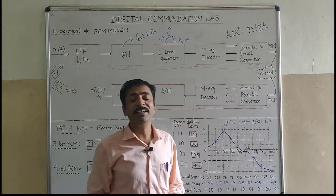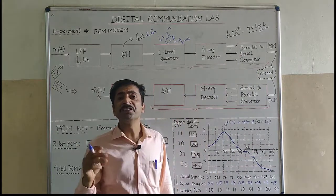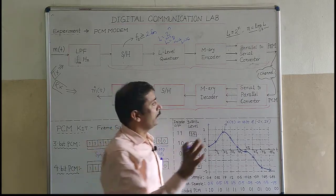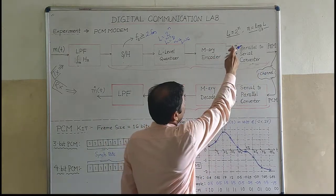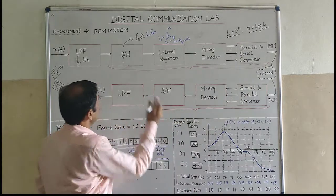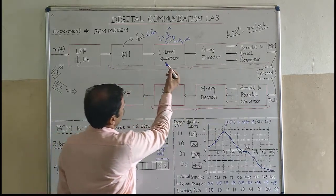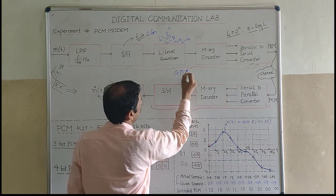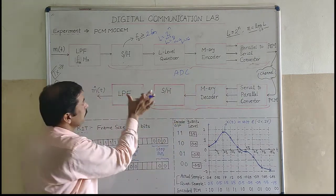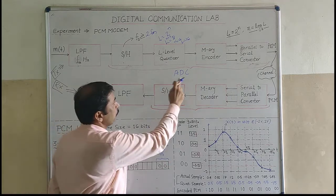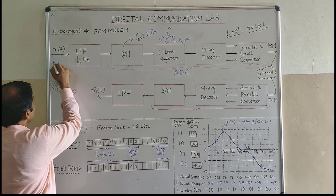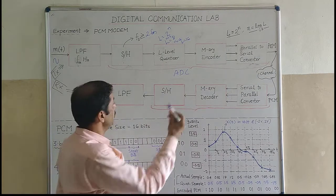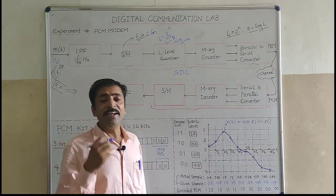The parallel-in serial-out shift register converts the parallel data to serial. Together — sample and hold, L-level quantizer, M-array encoder, and parallel-to-serial converter — this is called ADC, analog to digital conversion. The process of PCM modulation is nothing but analog to digital conversion: I apply an analog signal and get binary bits representing that analog signal.